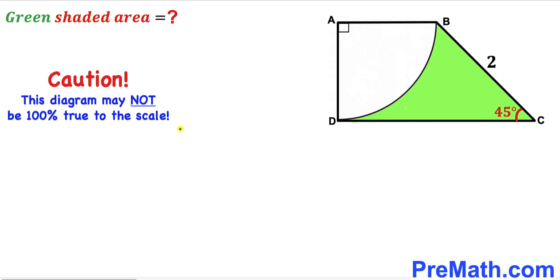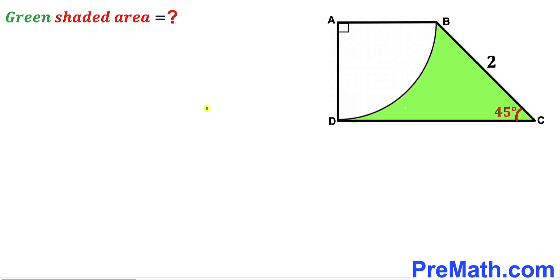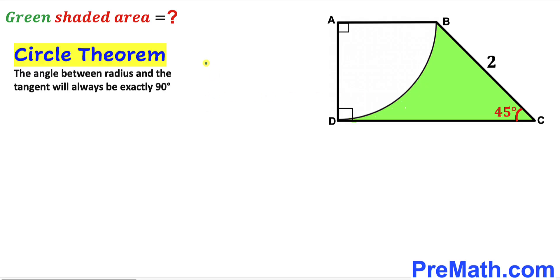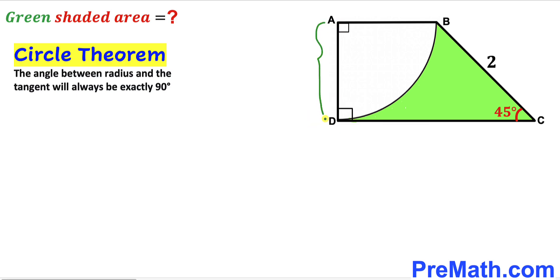Please keep in mind that this figure may not be 100% true to scale. Let's get started. Our very first step is to recall the circle theorem: the angle between the radius and the tangent line will always be exactly 90 degrees. So angle ADC is a 90-degree angle, since AD is the radius and CD is the tangent line.